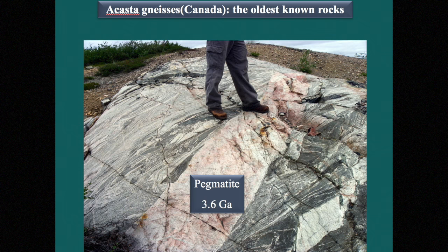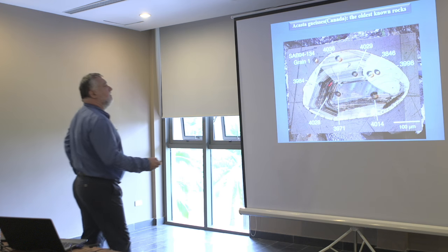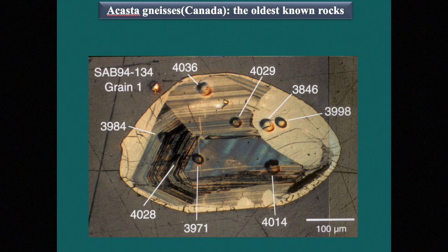You can see these rocks here. They are cut by a dike, which is a pegmatite, which is 3.6 billion years old. The rocks show a very nice foliation, and in these rocks there are zircon crystals that give ages around 4 billion years. The oldest one is 4.036 billion years. So this is the age of the crystallization of this rock.